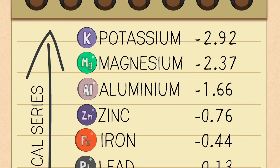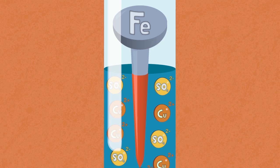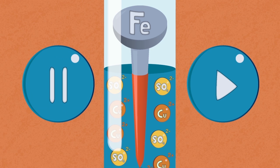You can use this idea to predict whether a displacement reaction will occur. Here's a challenge: can you explain why the iron nail formed a copper coating when it was placed in the solution of copper sulfate? Pause, think, and continue when ready.